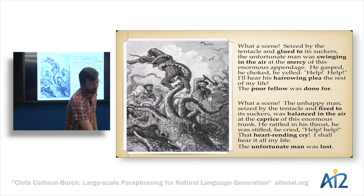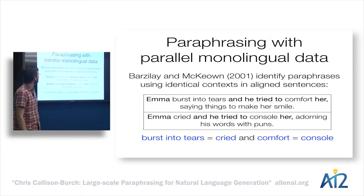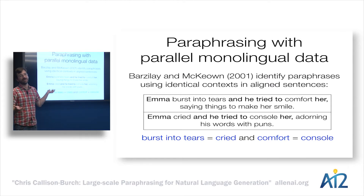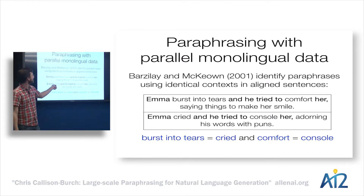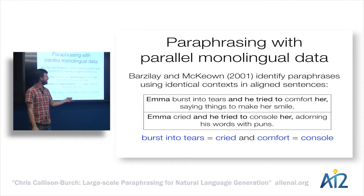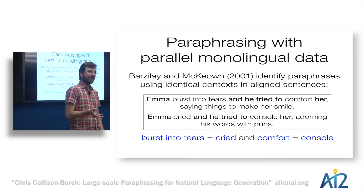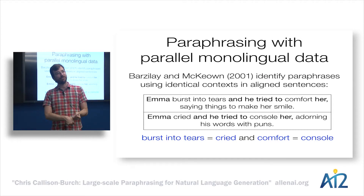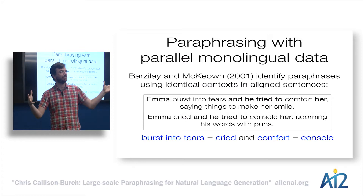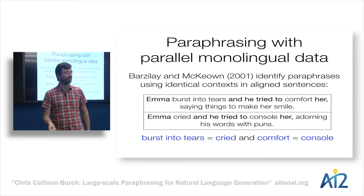Regina and Kathy McEwen aligned sentences across these texts and showed that you could use very simple heuristics like identical surrounding substrings to pick out paraphrases. For example, 'burst into tears' is a potential paraphrase of 'cried' because it's surrounded by 'Emma' and 'he tried to.' Similarly 'comfort' and 'console' have identical surrounding substrings in these aligned sentence pairs. These are great because they're clearly paraphrases and they not only give you lexical paraphrases, but whole sentential units useful for learning other sorts of transformations.